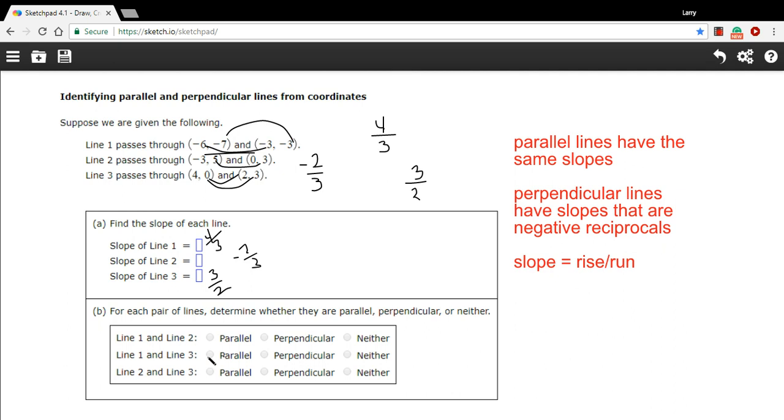All right, so part B asks us to compare. So first, line 1 and line 2. Line 1 has a slope of 4 thirds. Line 2 has a slope of negative 2 thirds. They are different, so they're not parallel. They're not negative reciprocals of each other. They're just totally different slopes. So these are neither, neither parallel nor perpendicular.